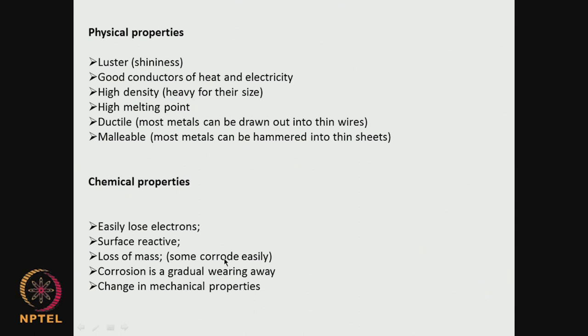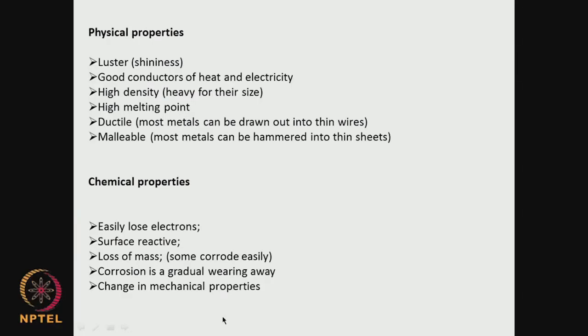Similarly, we have chemical properties. Metals easily lose electrons — so they can get charged on the surface. They are surface reactive, so if you want to add some surface groups or modify the surfaces, these metals are very good. They corrode easily — that is a disadvantage. Stainless steel can start corroding, that is why stainless steel is good for short duration; ideally titanium may be better for long duration. When it starts corroding slowly, the material can wear away. Apart from normal mechanical wearing, corrosion can form oxides — these oxides could have lesser strength compared to the metal, leading to changes in mechanical properties due to corrosion, wearing, and oxide formation.